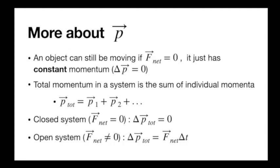An object can still have momentum without a net force being applied. The net force gives us ΔP, not just momentum itself. An object can be stationary or moving at any speed; if its momentum is constant, we know F_net is zero. We can also talk about the momentum of a whole system by adding up each individual object's momentum. The total momentum P_total is a sum of vectors, so it's not necessarily in the same direction as P1 or P2.